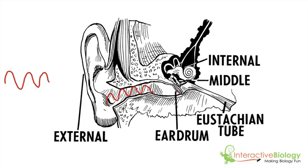That vibration strikes the eardrum, causing it to vibrate back and forth. The malleus is connected to the eardrum directly, the incus is connected to the malleus, and the stapes is connected to the incus — so that causes those bones to vibrate. When those bones vibrate, it causes the oval window to vibrate. Inside the cochlea, which the oval window is connected to, there is fluid, and that fluid is going to vibrate as well.